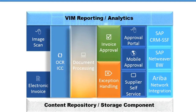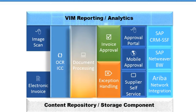Whatever format it arrives in, it goes through OCR technology — optical character recognition — which reads all the letters, alphabets, vendor number, amount, and all the important fields in an invoice. It is intelligent enough to figure out the vendor number based on the vendor master data that is being moved from SAP to ICC every night, and then it will determine the vendor number, amount, tax ID, and which vendor the invoice belongs to.